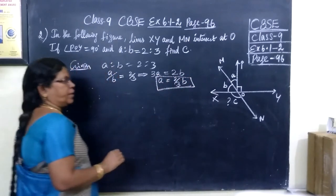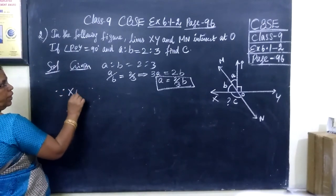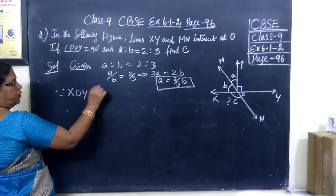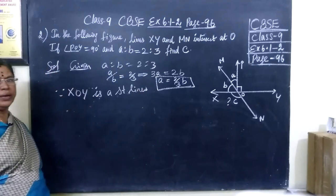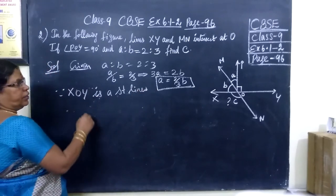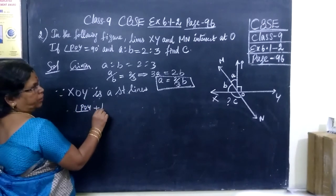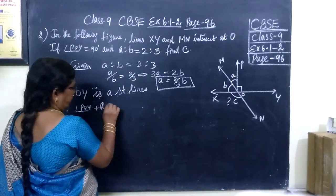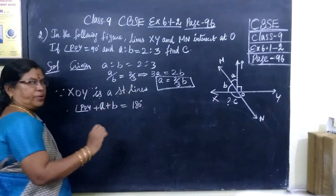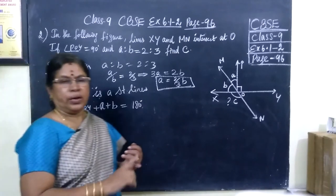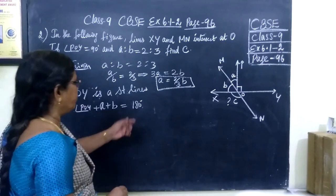And you know, since XOY is a straight line, we know sum of the angles on a straight line is equal to 180 degrees. So here, POY plus angle A plus angle B equals 180 degrees. This angle plus A plus B equals 180.